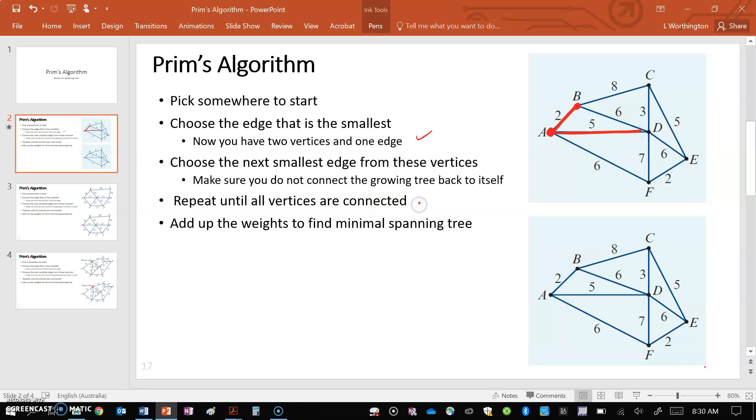And then we're just repeating, making sure that we don't link up something that's already been linked. So the next smallest from here is 3, the next smallest from there is 5, the next smallest from there is 2.